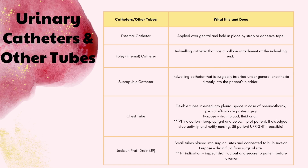Next we have the chest tube. This is very common with patients in the ICU who have had a traumatic incident, a CABG, or on cardiac floors. The biggest thing for PT is making sure we keep it upright and below the hip of the patient. If this is dislodged, stop activity and notify nursing immediately. Sit the patient upright if possible.